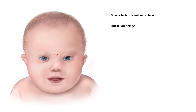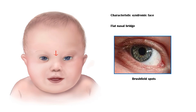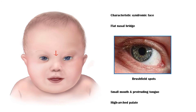They also have Brushfield spots in their eyes, characterized by tiny white spots in the periphery of the iris. Their mouths are small, hence the tongue protrudes out. They also have a high-arched palate. Other features include low-set ears and small nose.